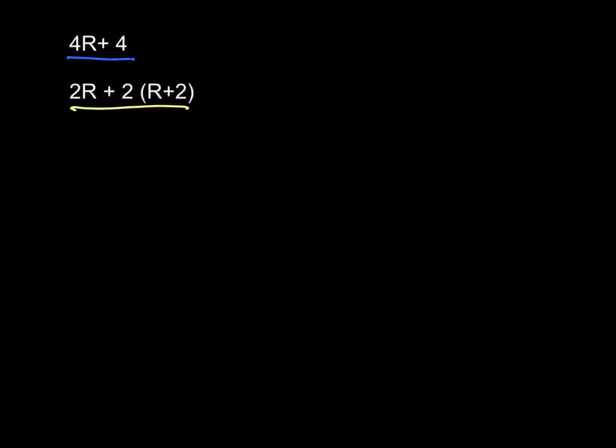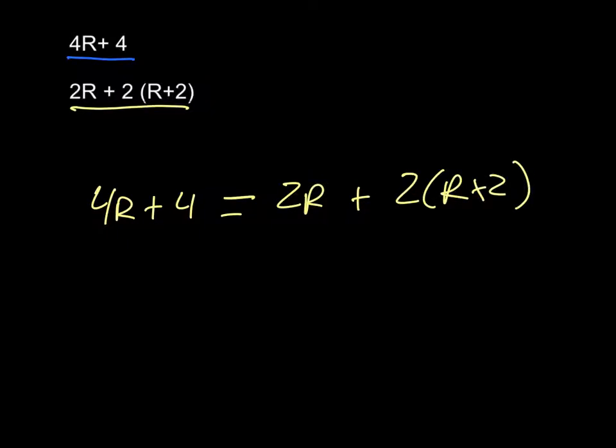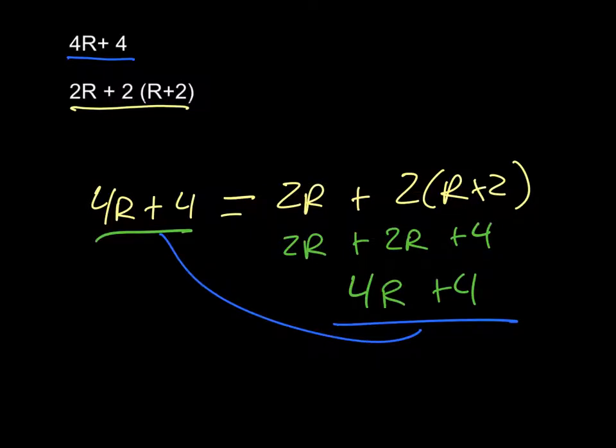The reason that we get 4r for both is because these are called equivalent expressions. That means that if I have 4r and 4, it's the same thing as 2r plus 2 times the sum of r and 2. It doesn't look the same, but as we went through it last time, you can see that we can simplify and use the distributive property to help us to get the same solution where we end up with 4r plus 4 and 4r plus 4.